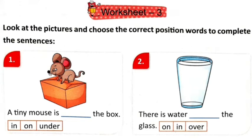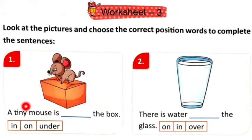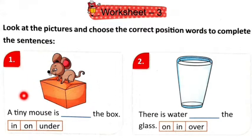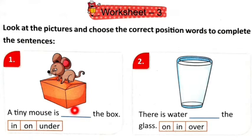Now worksheet three: Look at the pictures and choose the correct position words to complete the sentences. Picture ko dekhna hai, aapko ek sentence given hai aur uske saath teen options given hain — position words ke. Aapne picture ke according correct position word choose karke blank mein fill karna hai. This is the first picture: 'A tiny mouse is ___ the box.' Tiny mouse box ke kahaan hai? In, on, ya under? On hai na, iske upar baitha hai, toh you will write 'on'.